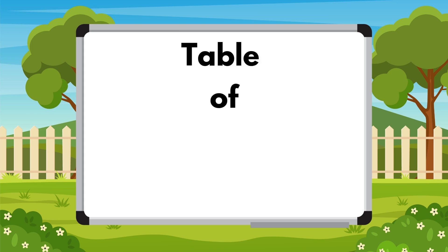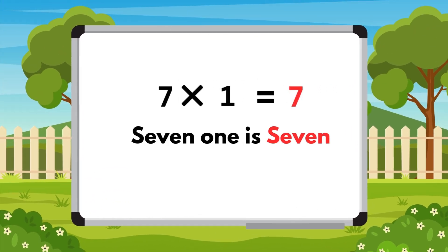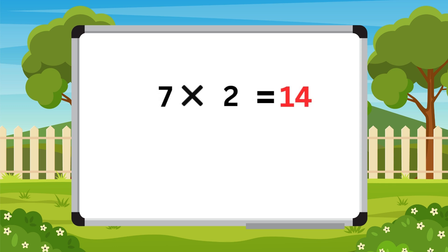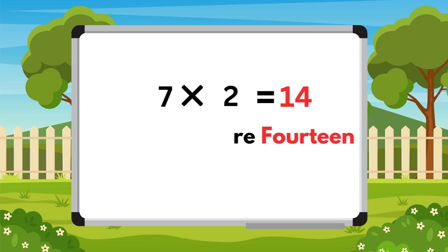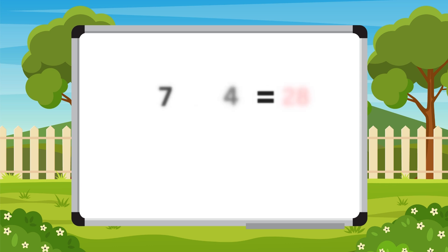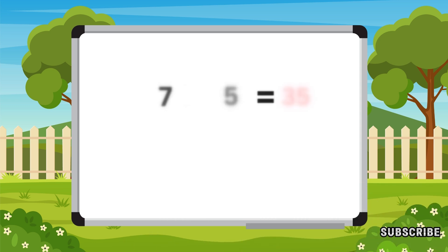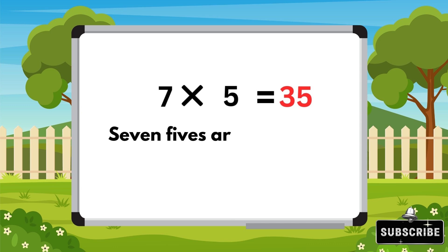Table of seven. Seven one is seven. Seven twos are fourteen. Seven threes are twenty-one. Seven fours are twenty-eight.